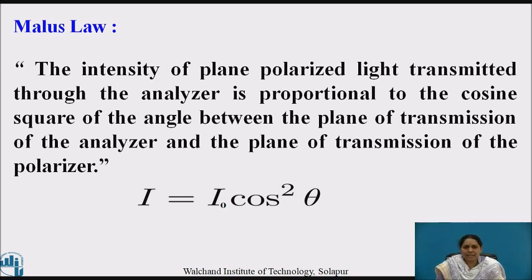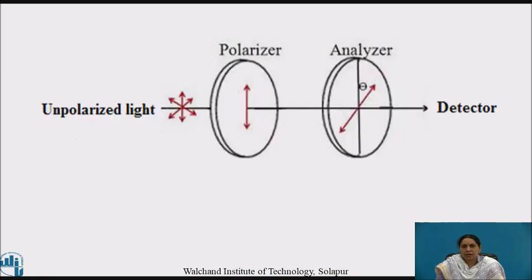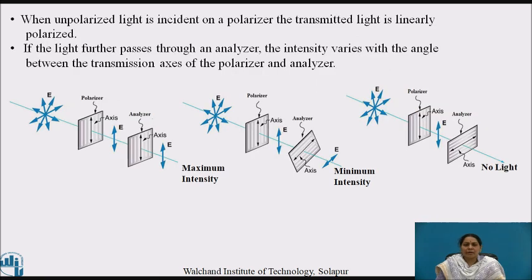The intensity of plane polarized light transmitted through the analyzer is proportional to the cosine square of the angle between the plane of transmission of the analyzer and the plane of transmission of the polarizer. Consider a figure in which unpolarized light, when passed through a polarizer, produces plane polarized light, which is then analyzed by an analyzer through some specific rotation theta and detected under a detector. When unpolarized light is incident on the polarizer, the transmitted light is linearly polarized. If the light further passes through an analyzer, the intensity varies with the angle between the transmission axes of the analyzer and polarizer.